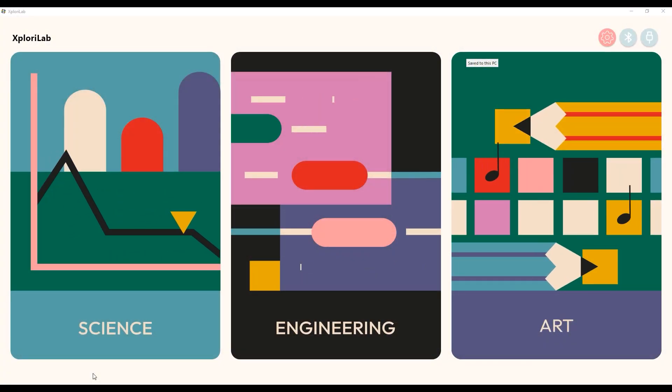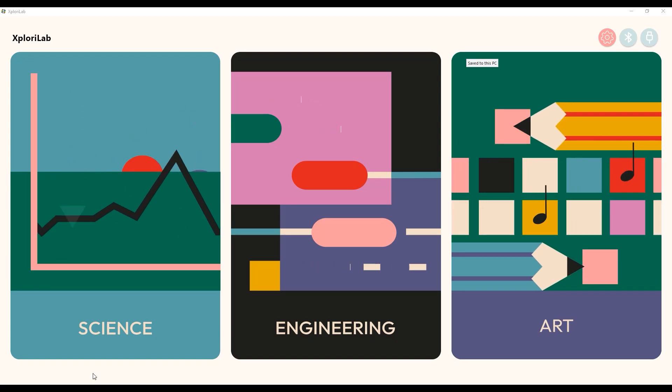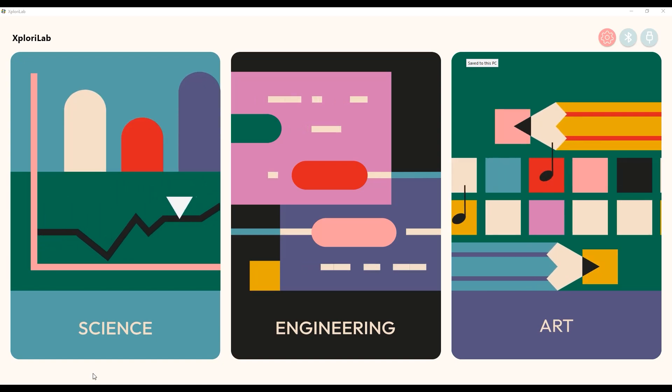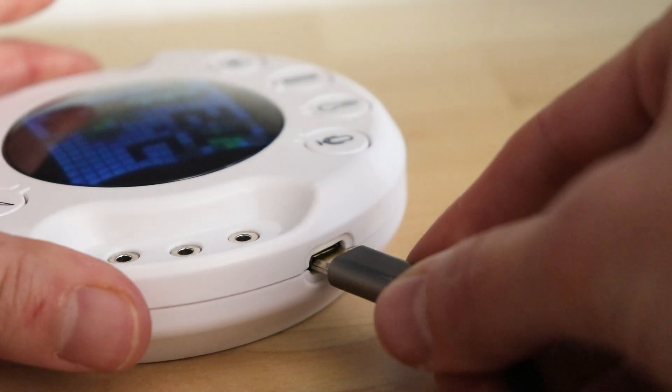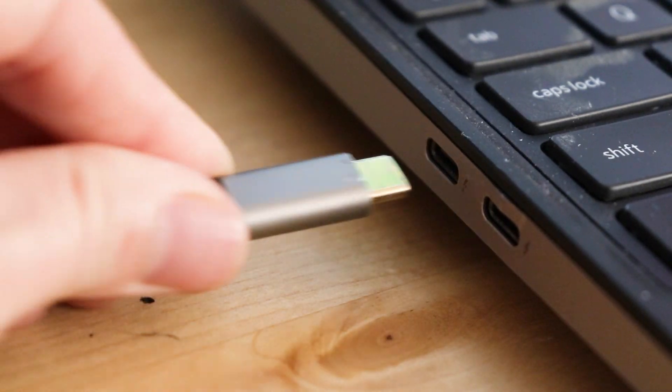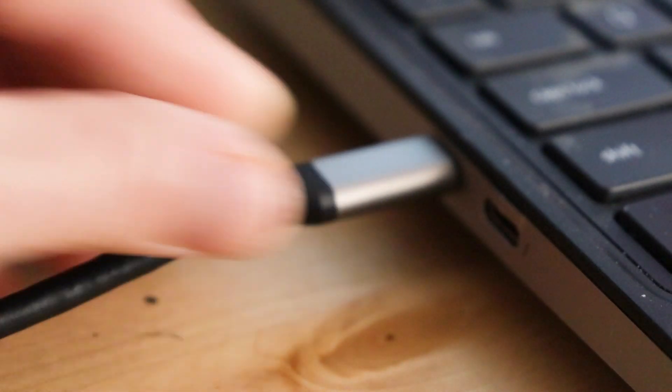After you've done both of those things, you have two options. If your computing device has a USB port, you can simply plug one end of your USB-C cable into your Xploris and the other end into your device.